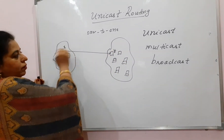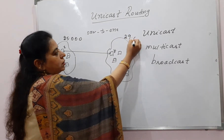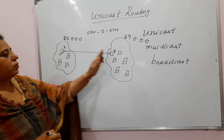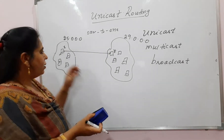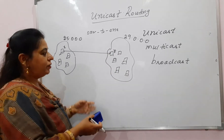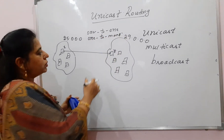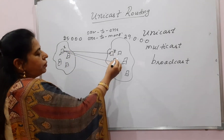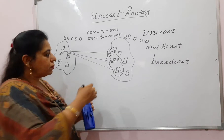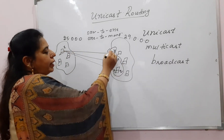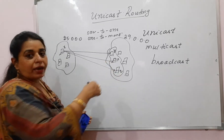In unicast, multicast, and broadcast: suppose we have one network 25.0.0.0 and another 29.0.0.0. If one host from this network wants to communicate with more than one host of the other network — one node to more than one node — then we say it is multicast, which is one-to-many. The source X communicates with a group of nodes P, Q, and others. We have protocols to carry out this multicast functionality as well.